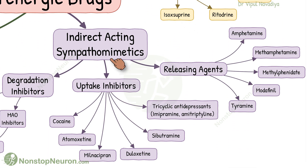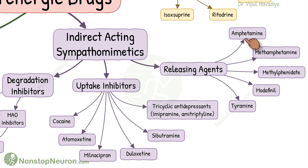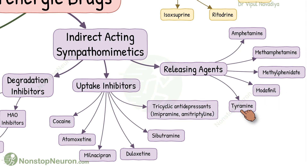Indirect-acting sympathomimetic drugs are further divided into catecholamine-releasing agents, uptake inhibitors, and degradation inhibitors. Amphetamine-like drugs are releasing agents; these include amphetamine, methamphetamine, methylphenidate, modafinil, and tyramine.